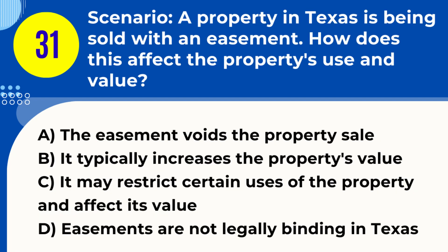Question 31. Scenario: A property in Texas is being sold with an easement. How does this affect the property's use and value? A. The easement voids the property sale. B. It typically increases the property's value. C. It may restrict certain uses of the property and affect its value. D. Easements are not legally binding in Texas. Answer: C. It may restrict certain uses of the property and affect its value. Explanation: Selling a property with an easement in Texas can impact its use, as easements grant certain rights to others over the property, and this can also affect the property's value.